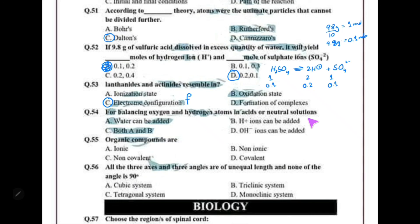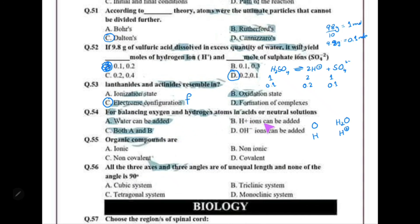For balancing oxidation and hydrogen atoms in acidic or neutral solution: in acidic or neutral medium, to balance oxygen you add a water molecule on the other side, and to balance hydrogen you add a hydrogen ion on the other side. So both water and hydrogen ions can be added — both A and B.